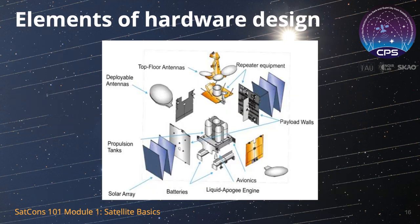While all satellites have their own special capabilities, certain elements are common to each. Engineers design around the bus, which is the main body and structural component of a satellite. Electric power is usually provided by photovoltaic panels that convert sunlight to electricity. Batteries maintain the power supply when the satellite is in the shadow of the Earth. Propulsion units help to maintain the satellite's orbit and orientation with respect to Earth. And radio transmitters and antennas enable communication with the ground. Excluding solar panels, most satellites are roughly the size of a small car and weigh only a few hundred kilograms.